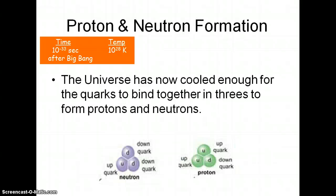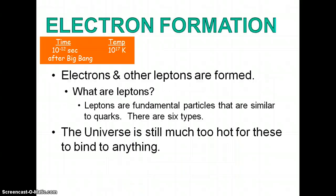Then at 10 to the negative 33 seconds after the Big Bang, the temperature is coming down. The universe is now cooling off enough that the quarks are going to start binding — binding in threes to form protons and neutrons. Depending on what three quarks bind together, you get either a proton or a neutron. So first we had the quarks form, and now they are forming protons and neutrons.